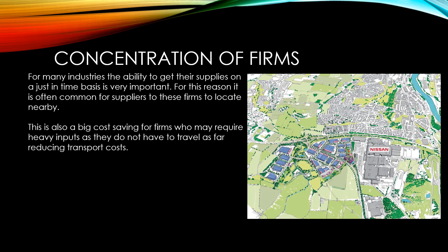In Sunderland, the Nissan car plant operates with a just-in-time policy and has some of its suppliers located actually within its premises. Others are located in a nearby business park built especially to support it.